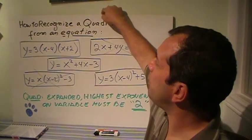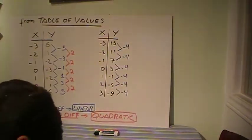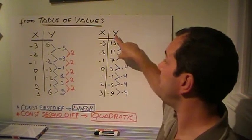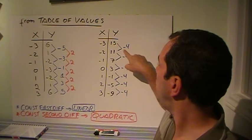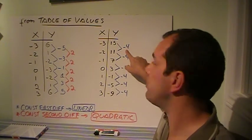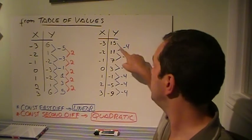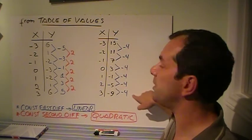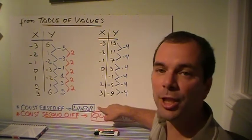How do we recognize a quadratic from a table of values? Very easy. When you do the first differences — why is this minus 4 and not positive 4? Here's an easy way to remember: how do you go from 15 to 11? I go down by 4, so that's minus 4. All my first differences are the same — minus 4, minus 4, minus 4. If the first differences are constant, then it's a linear function.